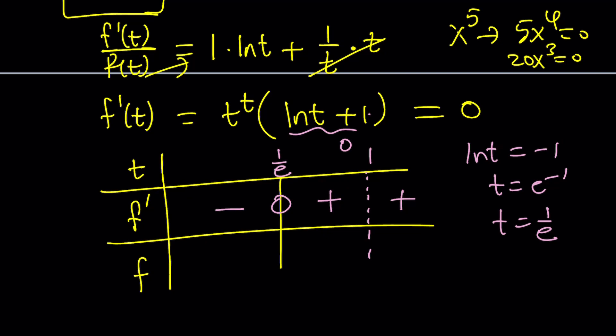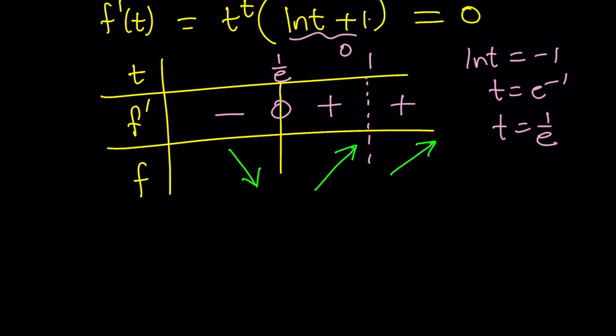Now here's the behavior of our function. If f prime is negative on an interval, our function must be decreasing, and if it's positive, our function must be increasing. So we do have a minimum at 1 over e. Let's see what this means. Let's go ahead and take a look at the graph.